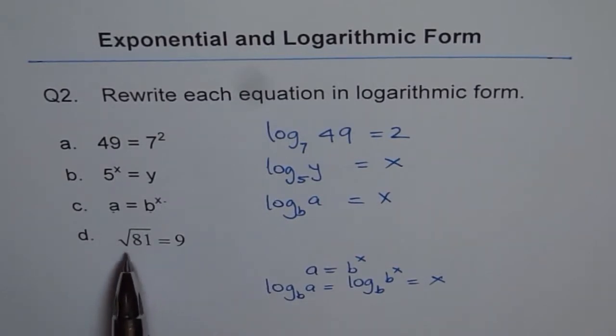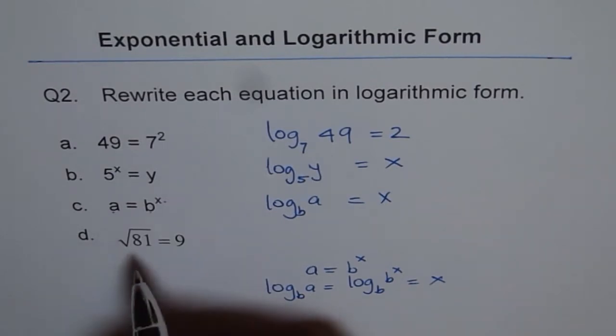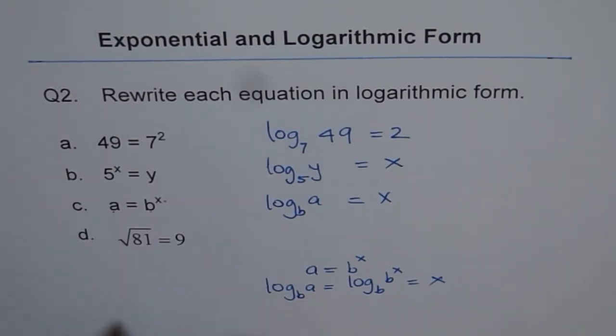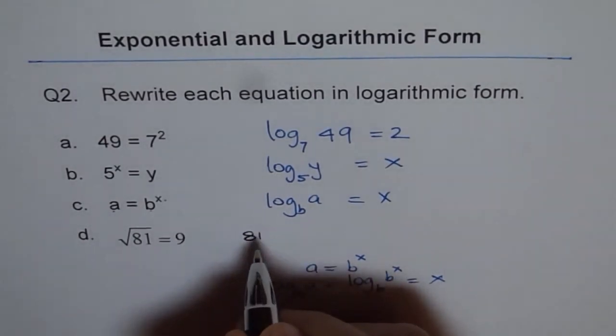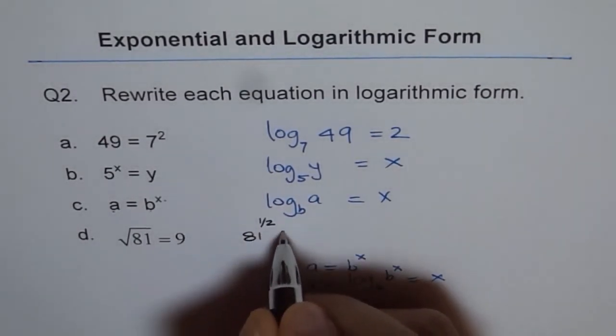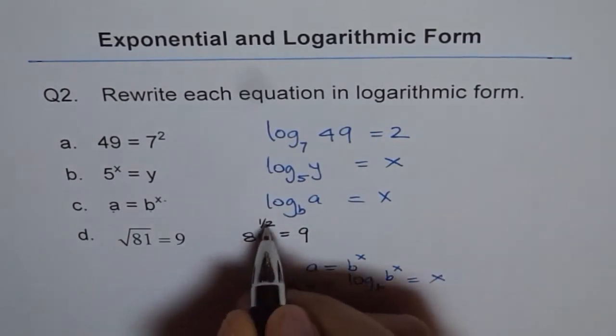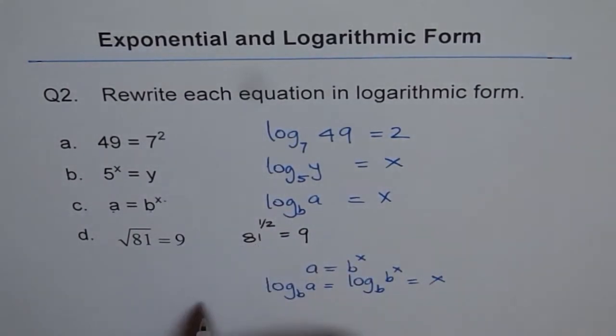This one is kind of tricky. What is the base here? In this case, let me show you separately. Square root of 81, so the base actually is 81. We can write this as 81 to the power of half equals to 9. The base is 81.